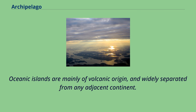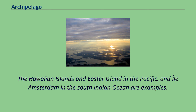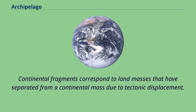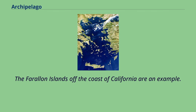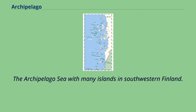Oceanic islands are mainly of volcanic origin and widely separated from any adjacent continent. The Hawaiian Islands and Easter Island in the Pacific, and Île Amsterdam in the South Indian Ocean are examples. Continental fragments correspond to land masses that have separated from a continental mass due to tectonic displacement. The Farallon Islands off the coast of California are an example.